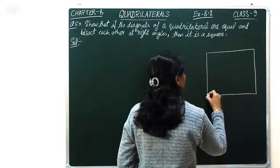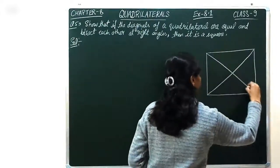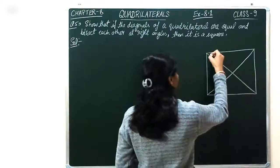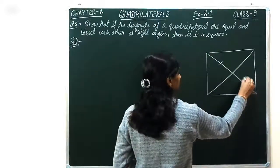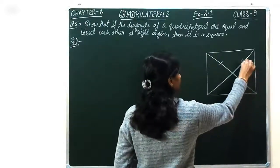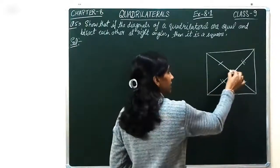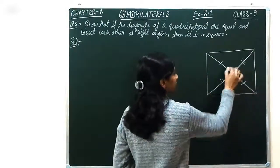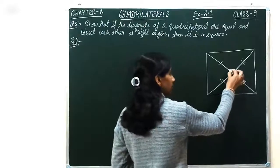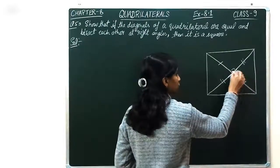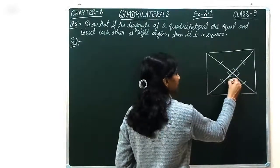The diagonals are equal and bisect each other. The sides are equal on both parts, and they are intersecting at right angles — these angles are 90 degrees.